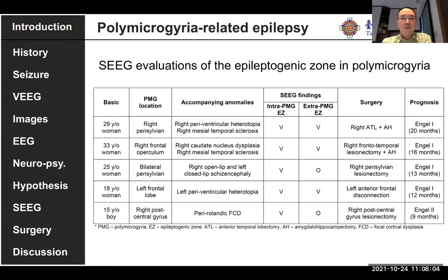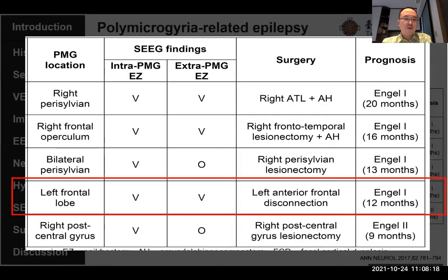In the past five years, we have five polymicrogyria cases and four schizencephaly cases. Today, I will present one from each group and try to figure out what kind of SEEG strategy we can apply on the road of SEEG in these kinds of cases.